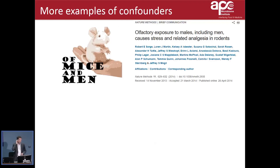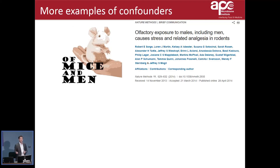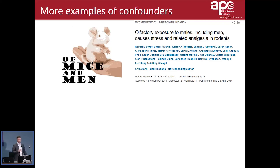Some other examples of confounders: a study in Nature Methods a few years ago showed that mice handled by men in the lab were more stressed than mice handled by women, for some reason. That's an unknown unknown — something to be aware of and to keep consistent. This was not a microbiome study, but it is important for anyone involved in behavioral studies to be aware of.